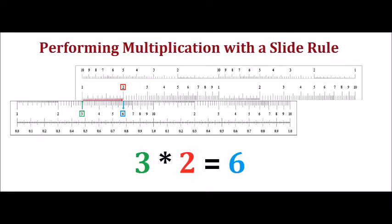So how do we perform multiplication with the slide rule? In a very similar way to the ruler example we just saw. Suppose you want to compute 3 times 2. Start at 3, as boxed in green.